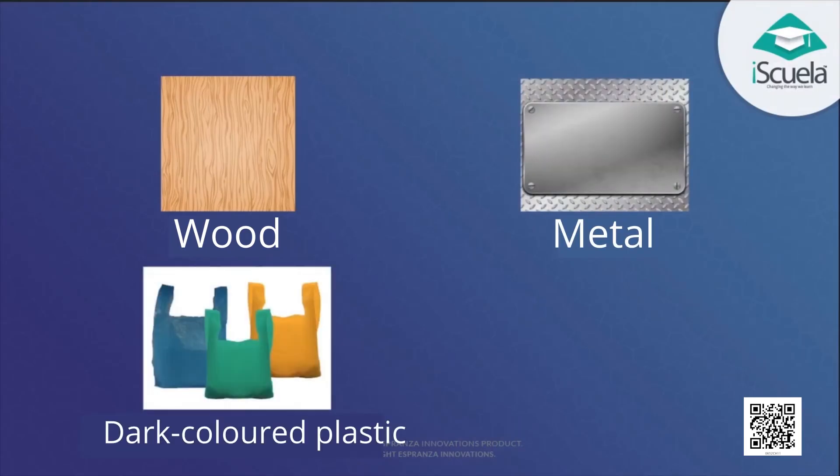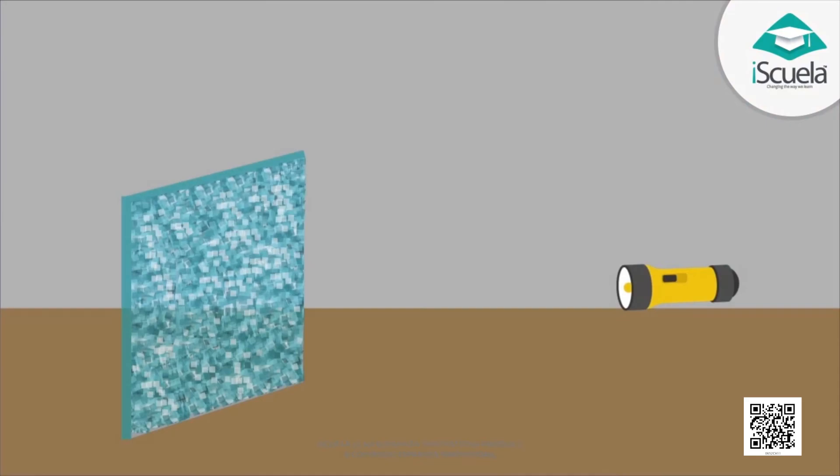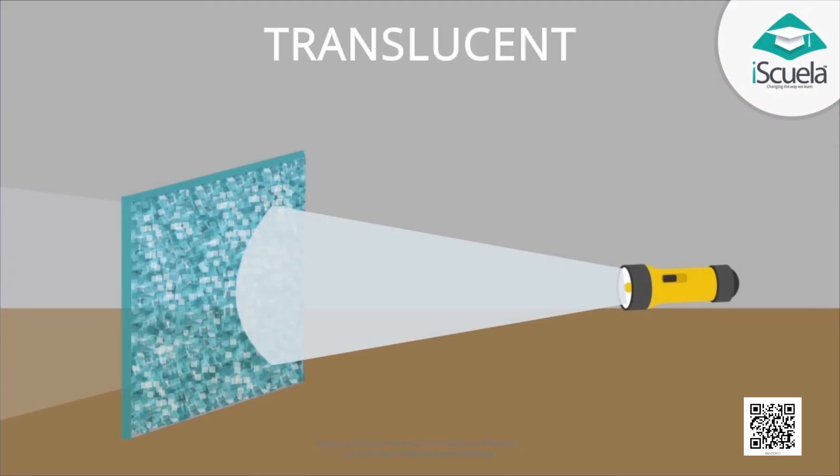Metals, dark coloured plastic and stone are examples of opaque objects. There are some objects through which we can see but not very clearly. Such objects are called translucent objects.